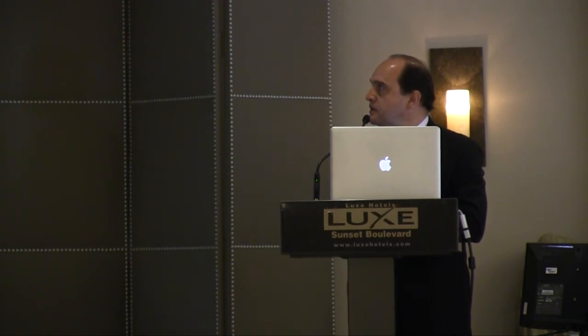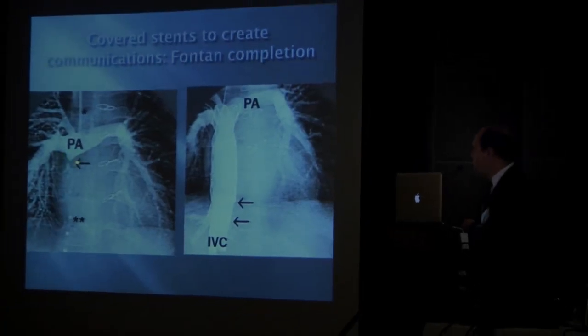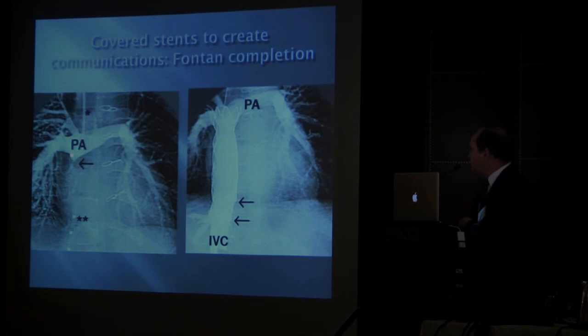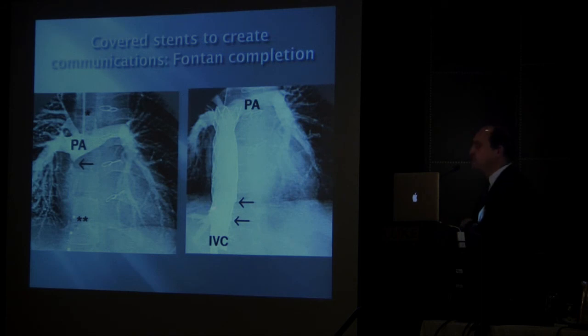This is an example of using covered stents to create communications or achieve Fontan completion — the holy grail right now of interventional cath. This is not one that we did. The pulmonary artery has been prepared; they puncture and make a connection across, then put a covered stent. The problem at the top is that stent struts cross over the lumen of the pulmonary arteries. The major limiting factor down below is that if the covering goes all the way down, you might exclude some hepatic veins; if there's not enough covering, there will be leaking. So it's very difficult to achieve.